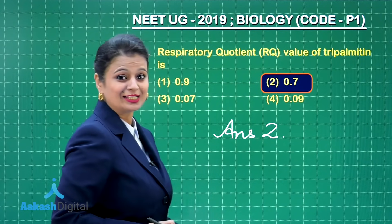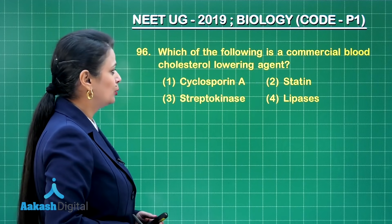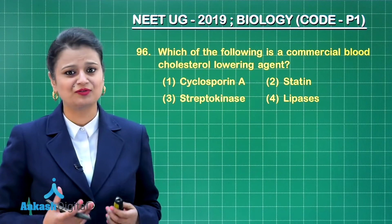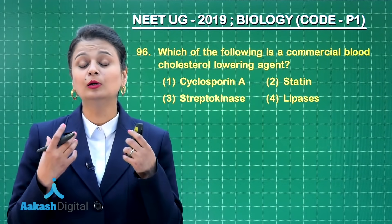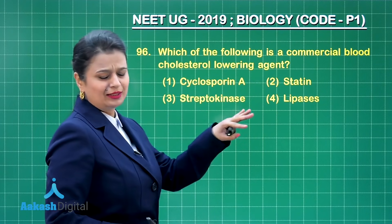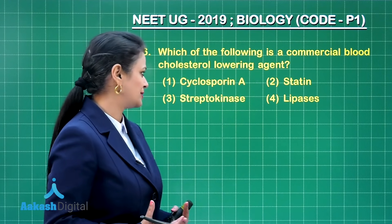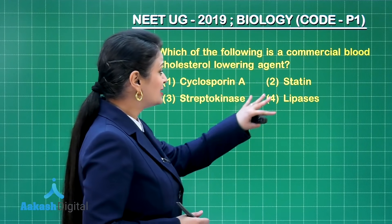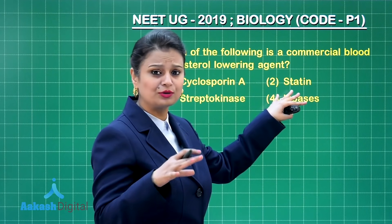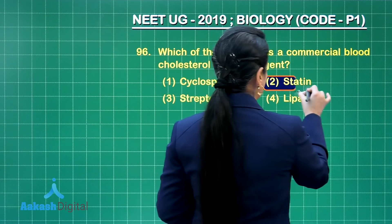Which of the following is a commercial blood cholesterol-lowering drug? We need to look for an option associated with lowering of cholesterol. Cyclosporin is a drug used as an immunosuppressant, so that's out. Statins — yes, statins are drugs used for reducing cholesterol. That is our right answer.